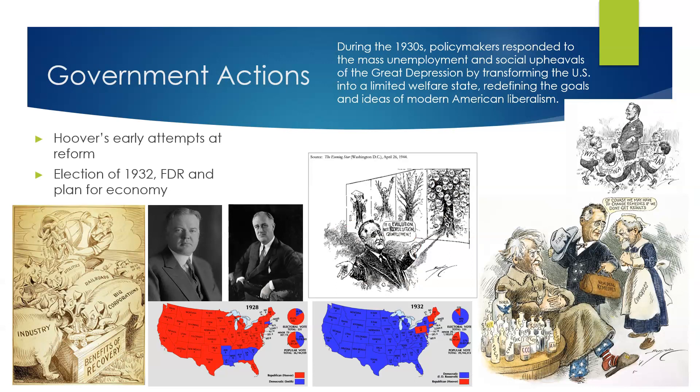Hoover's response to the Depression was to call for a spirit of volunteerism, asking businesses to keep workers employed and requesting the American people to tighten their belts in the spirit of rugged individualism. Eventually, he authorized the federal government to give aid to states and charities helping the poor. He also created the Reconstruction Finance Corporation, which set aside $2 billion to rescue banks, credit unions, and insurance companies, but with very strict requirements, so very few that actually needed help could qualify. It was later expanded to include public works projects, but again, few could qualify.